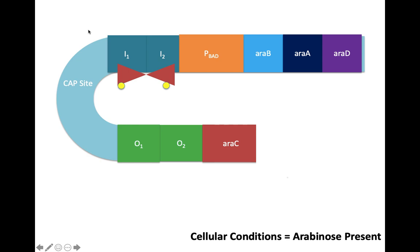This conformational change of the araC protein works in conjunction with the activator protein CAP to initiate transcription of the araBAD structural genes.